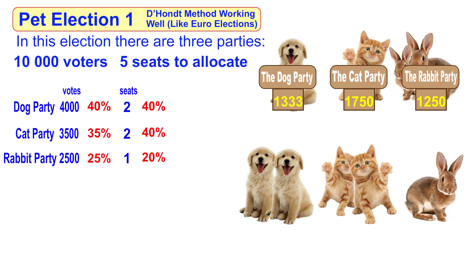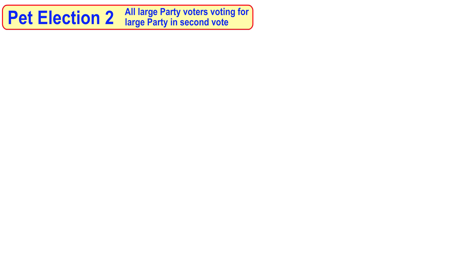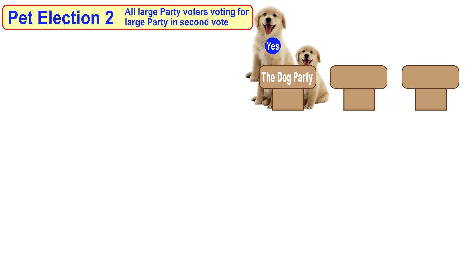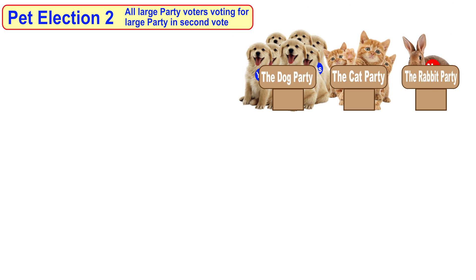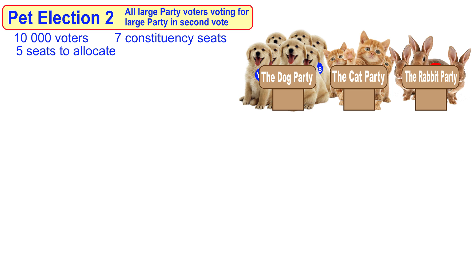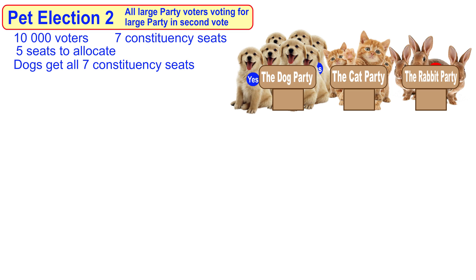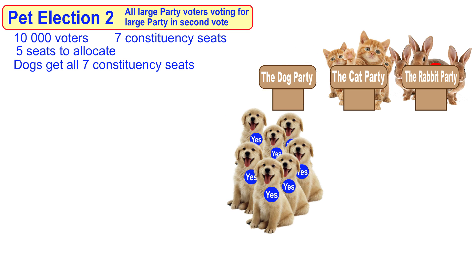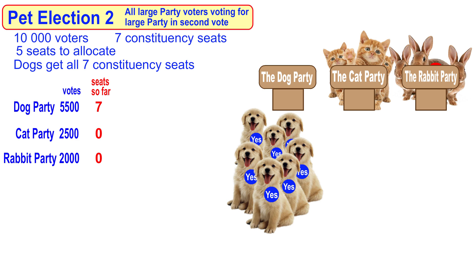Now let's run an election similar to the Scottish elections with first past the post constituency seats. The scenario is the dog party has run a referendum on leaving the humans, which it lost narrowly. The cat party and rabbit party had joined together to campaign against leaving and have now lost support. With the same three parties and 10,000 voters, there are 7 constituency seats with 5 seats to allocate. All the dog party voters vote for the dog party on the second vote as well. The dogs get all seven constituency seats with 55% of the vote. So the dog party has 5,500 second votes, the cat party has 2,500, and the rabbit party has 2,000.